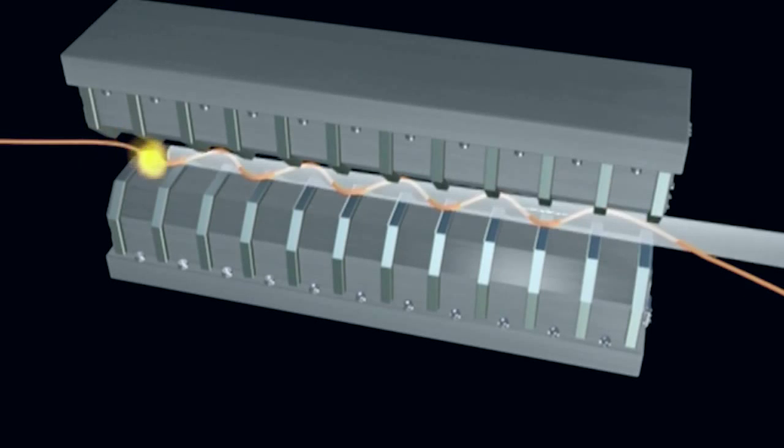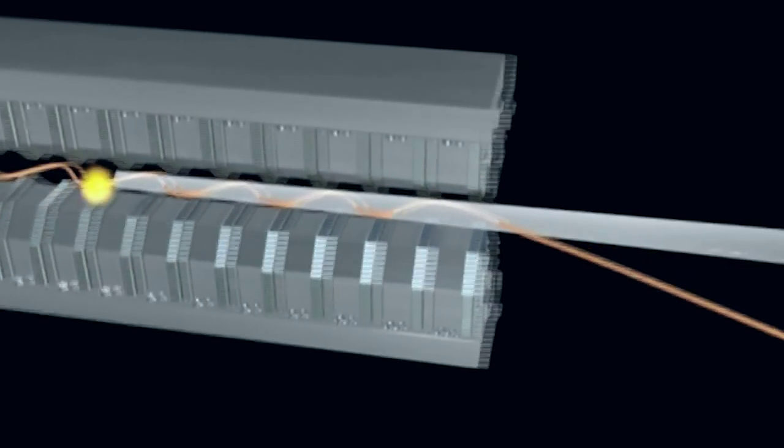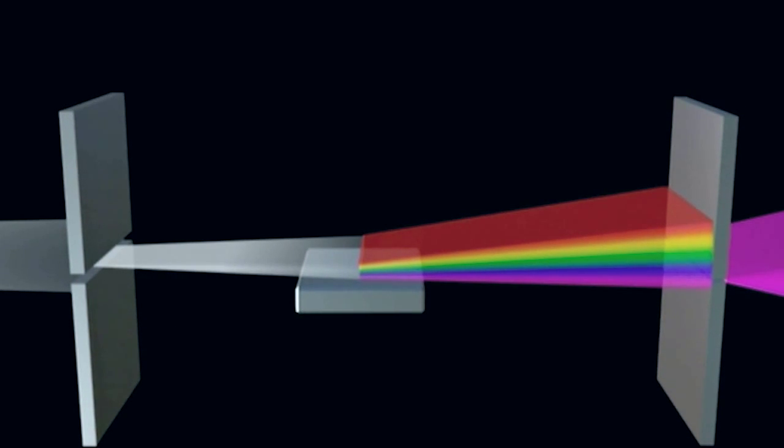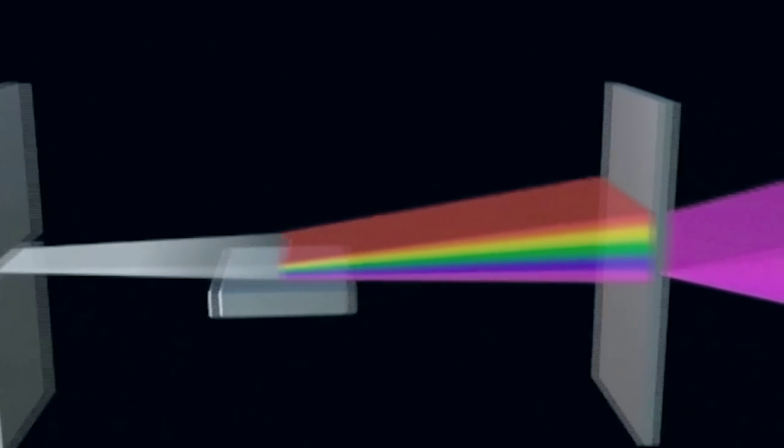So if you imagine electrons coming along here, they wiggle, and beams of X-rays come out that look very much like laser pointers. And each of the beams that comes out is tuned to a particular type of X-rays that make it good for a different type of science.